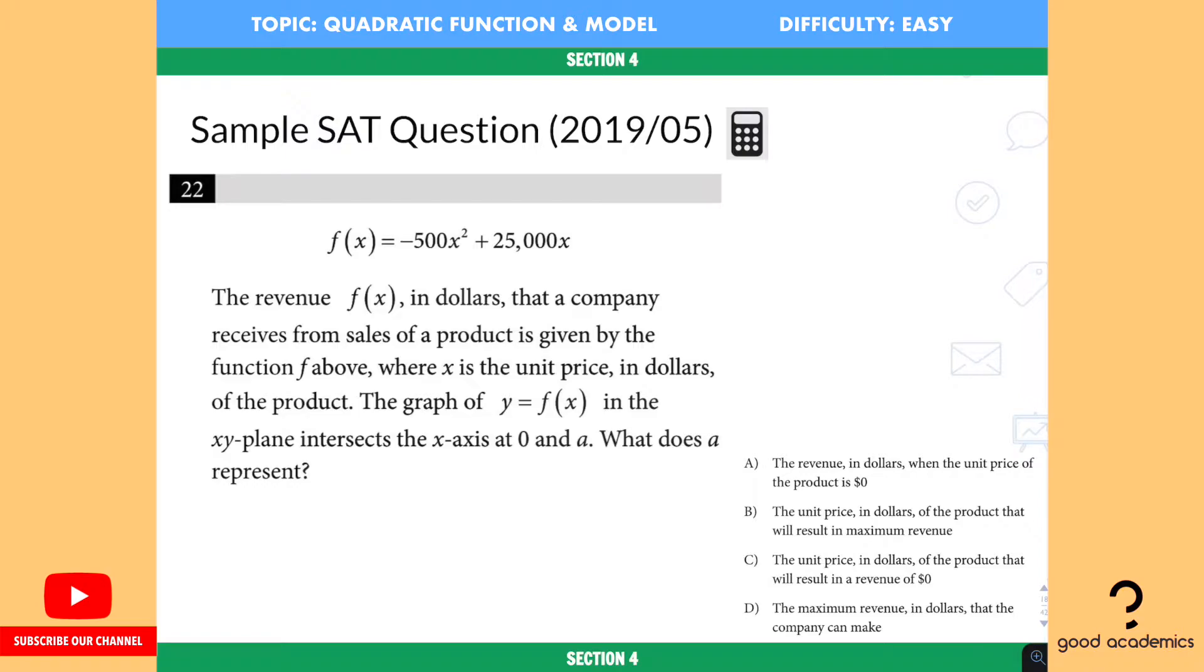So the first thing that you should see from this function is that for both terms, you have some common factor right here. They are both divisible by 500 and also divisible by x. That means you can factor out the negative 500 and x right here. That's the common factor. And so you have another factor, which is x minus 50.